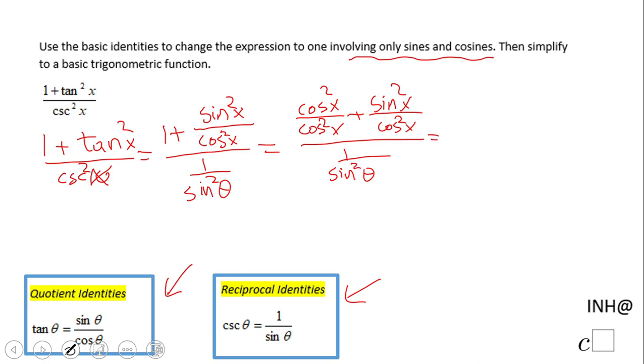We have cos²x as the common denominator for the numerator of this complex fraction. On top of the numerator, we have cos²x + sin²x, and in the denominator we have 1/sin²x.